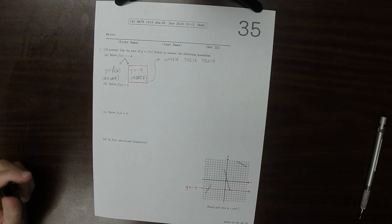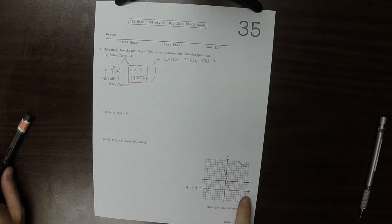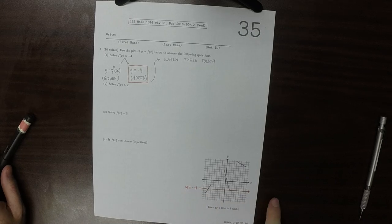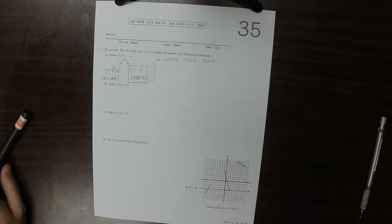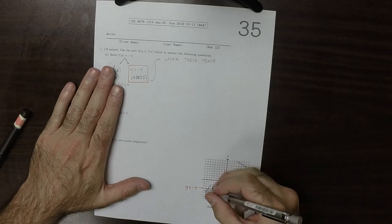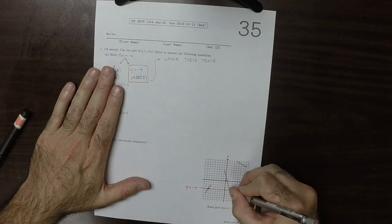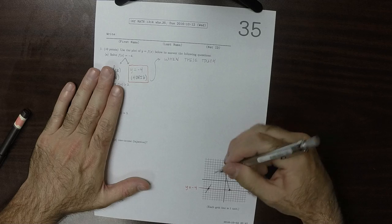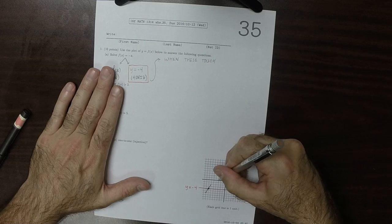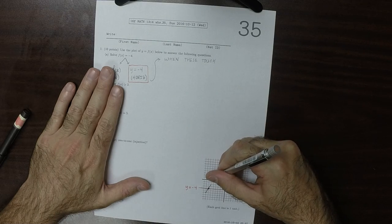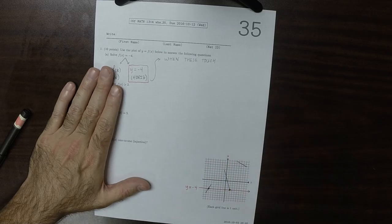So that's y as negative 4. And we want to know how many times does the red and the original plot touch. So they touch here and here. And those are x values 1, 2, 3, 4, 5, 6, negative 7. And also positive 2.